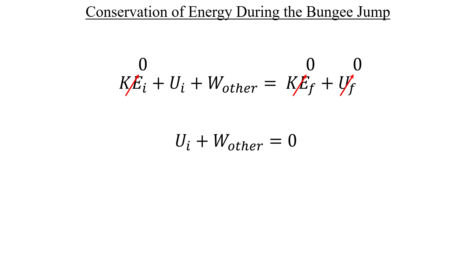The only way that we can get a positive result out of this is by using the work done by the cord, which is negative one half k x squared, where the x value that we use is the length that the cord stretches during the jump.